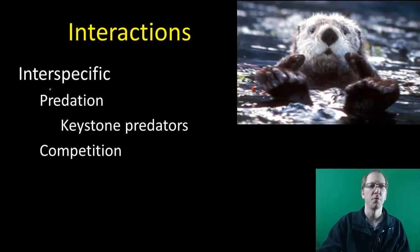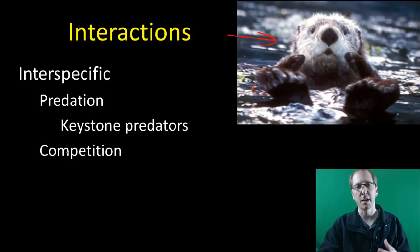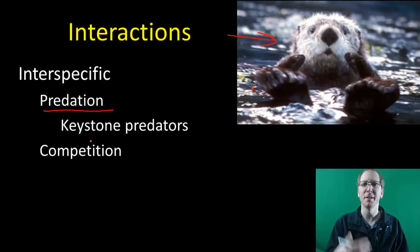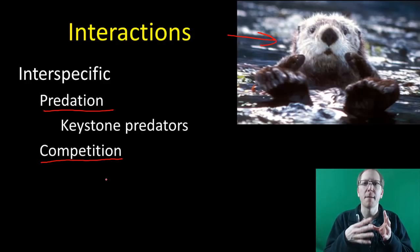Interactions between organisms — we're first going to look at interspecific interactions, which are between species. There are two basic types: predation, where one organism kills and eats another — pretty quick and brutal; and competition, which is more prolonged, where organisms fight over resources. It could be rabbits and deer both trying to get a particular type of plant, fighting over dens, or holes in trees for nesting. Any of these things can lead to competition between species.